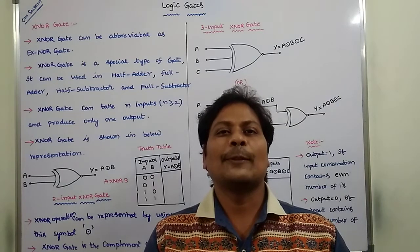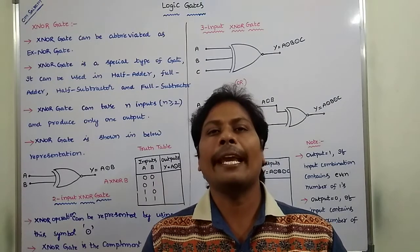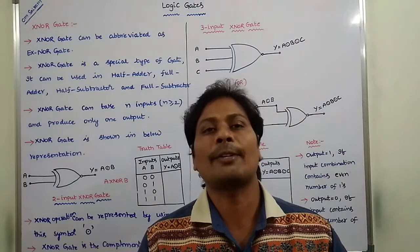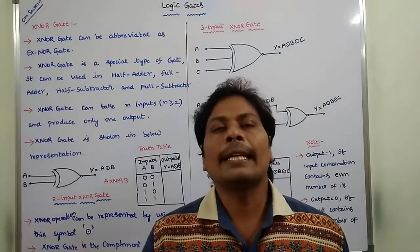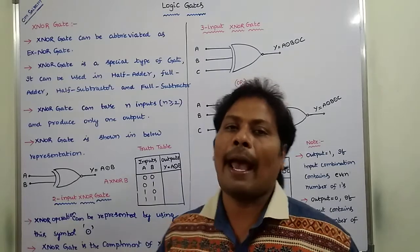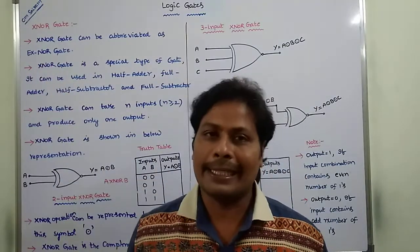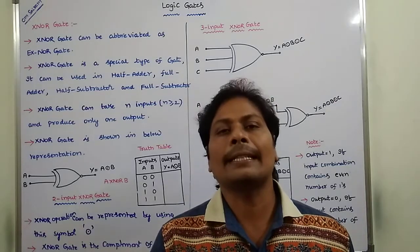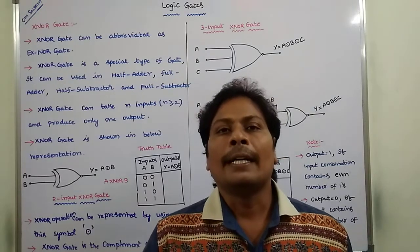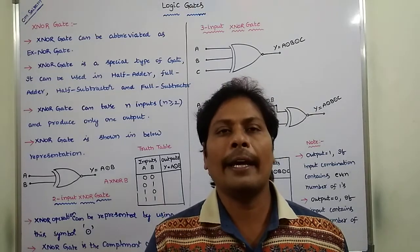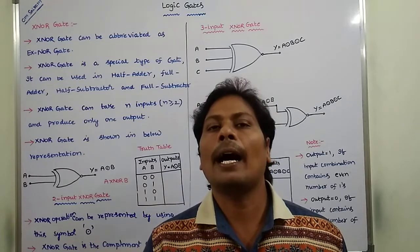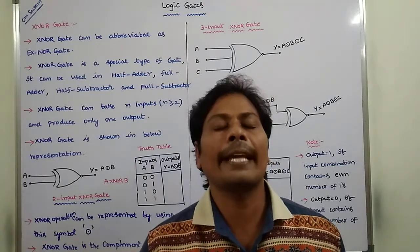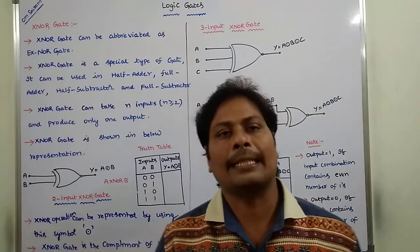Hi friends, today I am giving a lecture on one type of logic gate called the XNOR gate. XNOR gate is a special type of gate that can be used in the implementation of half adder, full adder, half subtractor, and full subtractor. Because of that reason, we can say that XNOR gate is a special type of gate.